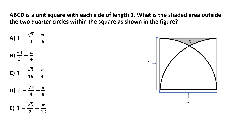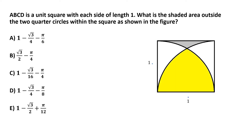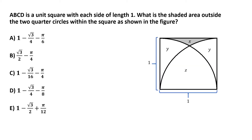We have two equal areas by symmetry, and I'm labeling each of them as y. Then we have this middle curved area — let's call that z. According to these labels, if we add all of these areas up we get the area of the square, which is simply one. So we have x plus 2y plus z — because y is included twice — equal to one, which is the area of the square.